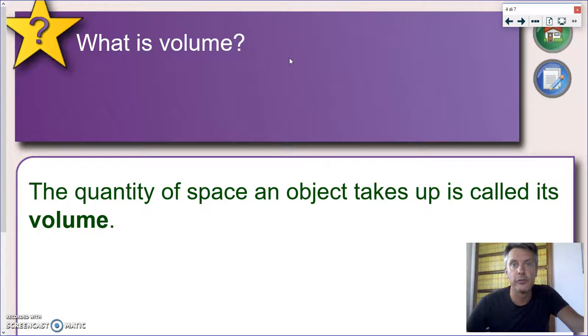The next part is about volume. So again, the definition. What is volume? We say that the volume of an object is the quantity, the amount of space this object takes up. Simply put, we can just say the volume is how big your object is.